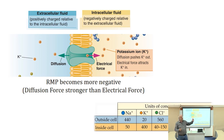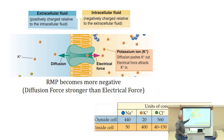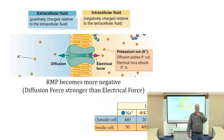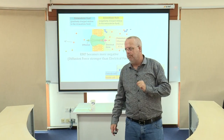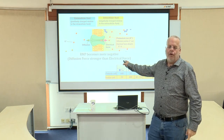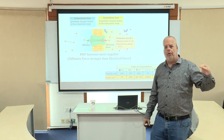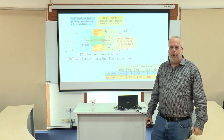But it's a positive ion, which is attracted to the negative interior of the neuron, so the electrical force is going to push it in. We have these two contrary forces — the electrical force pushing it in and the diffusion force pushing it out. The diffusion force is stronger, so ultimately, if we open up a channel for potassium, more potassium will flow out of the cell.